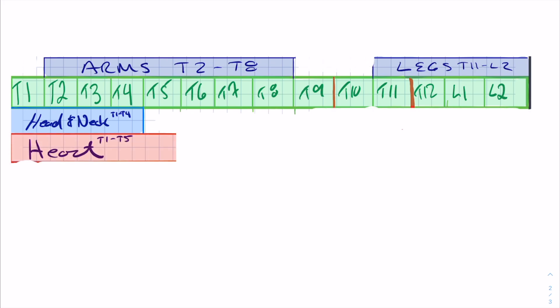If you get questions about the heart and they're asking which viscerosomatic reflex region, you would pick somewhere between T1 and T5. These questions will give you several different answer choices of different regions and you'll have to pick the right one. It should be easy to remember the head and neck and the heart at the beginning of the sympathetic chain — T1 to T4 and T1 to T5. The answer is not going to be T9 or T12 or L2; it's going to be from T1 through T5.